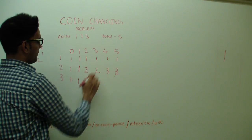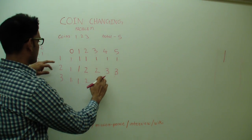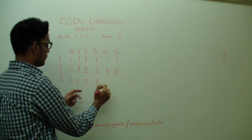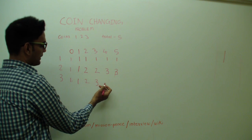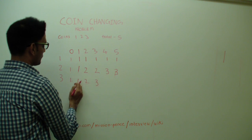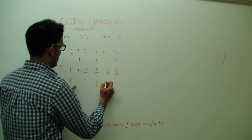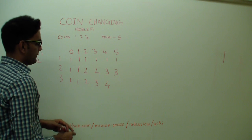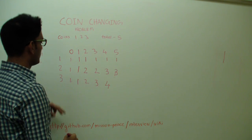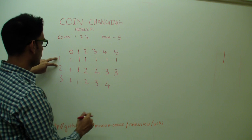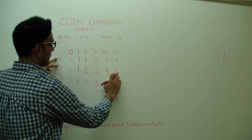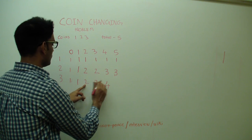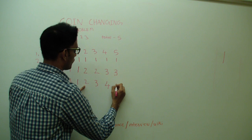For total of 4: using just coins 1 and 2 we can already get 4 in 3 ways. Introducing coin 3, we go 3 steps back, which gives 1, so total is 4. For total of 5: using coins 1 and 2 we could get 5 in 3 ways, and now introducing coin 3 we go 3 steps back, which gives 2. So 3 plus 2 equals 5.